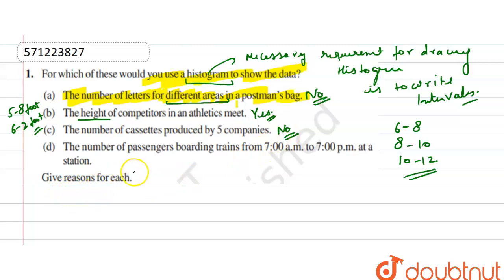The number of passengers boarding trains from 7 AM to 7 PM at a station. We can make intervals like 7 to 8, how many passengers travel, 60 like this, 7 to 8, 50 like this. We can make intervals, so yes, we are able to make it.